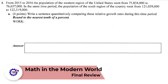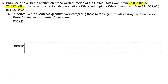All right, let's kick this off. We've got a period of time where the population went from about 75 million to 76 million. In the same time period, the population of the south region went from 121 million to 122 million, give or take. What we want to do is compare these two relative growth rates. The equation I'm going to be working with is relative growth — that's going to be new minus old over old.